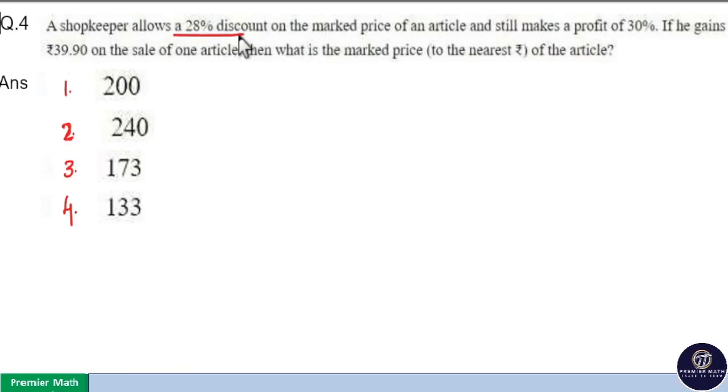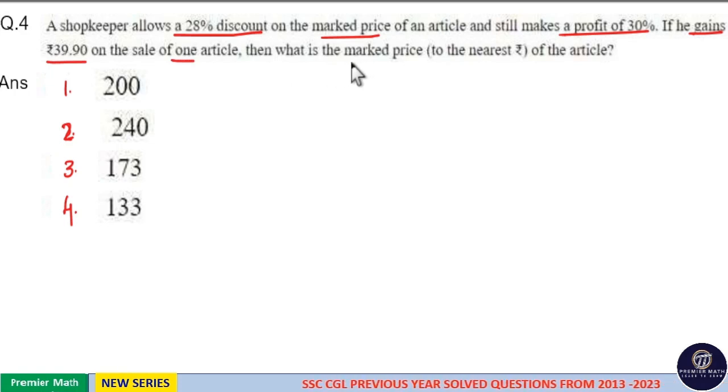A shopkeeper allows a 28% discount on the marked price of an article and still makes a profit of 30%. If he gains ₹39.90 on sale of one article, then what is the marked price of the article?